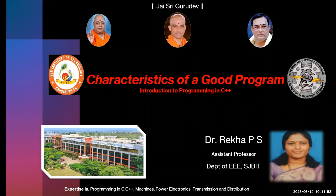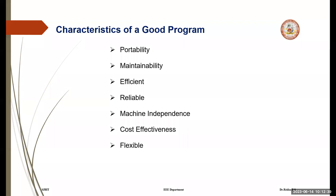Welcome to this session on characteristics of a good program. It's very essential for everyone to know what the different characteristics of a good program are. As a beginner starting with programming in C++ or any language, it's better to know these characteristics for writing the best programs. A computer program is a sequence or set of instructions in a programming language for a computer to execute. The program should be written in such a way that it is easier to understand and implement so that it can provide us with the desired output. The following are the characteristics of a good computer program.